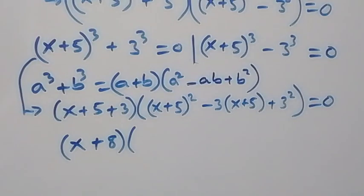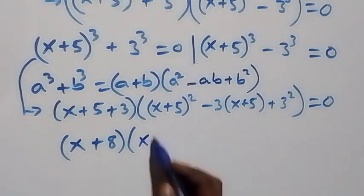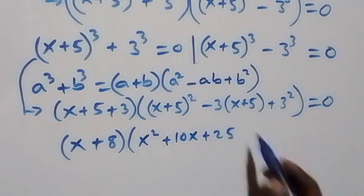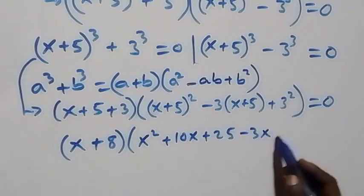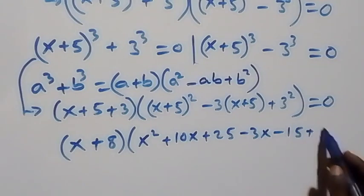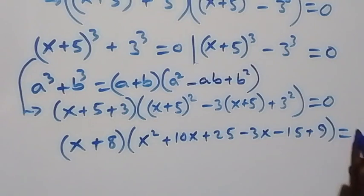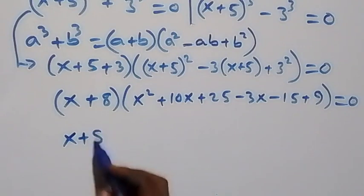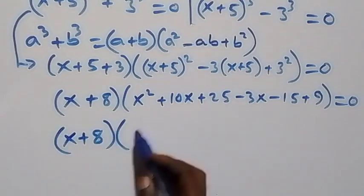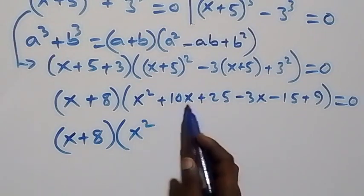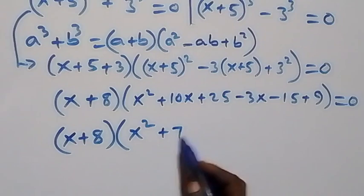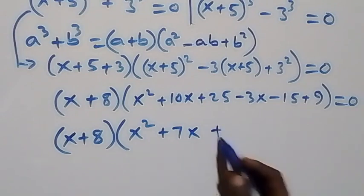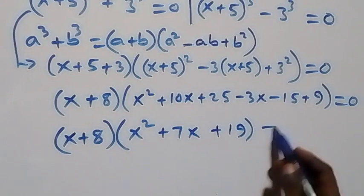Expanding inside the bracket: x squared plus 10x plus 25, then minus 3 times x plus 5 gives minus 3x minus 15, then plus 9. Collecting terms gives x squared plus 7x — since 10x minus 3x is 7x — and 25 minus 15 plus 9 gives 19. So we have x plus 8 times x squared plus 7x plus 19.